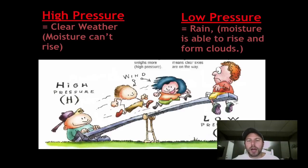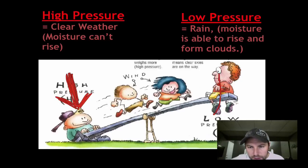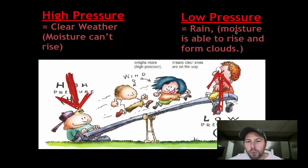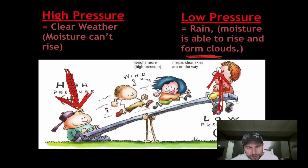A couple of things to remember with high and low pressure systems: high pressure air is also sinking air. You've got this fellow over here on the left-hand side — he's a little bigger, and notice that high pressure is pushing down. Over here, the low pressure is a little smaller, and you can see it's going upwards. Low pressure is associated with rain — moisture is able to rise and form clouds. High pressure sinks, so clear weather — moisture can't rise. We also have these two little guys showing the winds going from high to low.